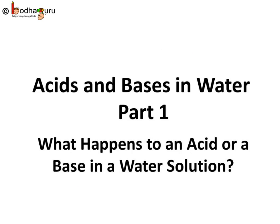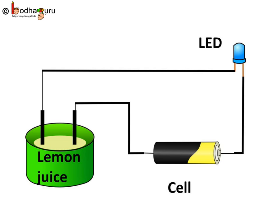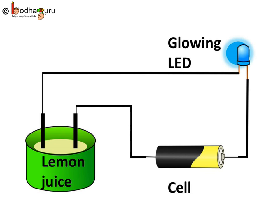Hello everyone. Let us take some lemon juice in a plastic cap. Now we take a cell and a LED. We create a circuit as shown in the picture and the LED will glow. Here the wires are not directly connected — they are connected by the lemon juice, which is acidic in nature. So here, acid is conducting electricity.